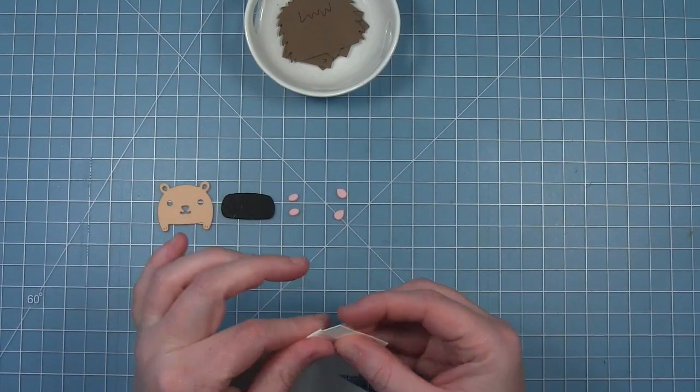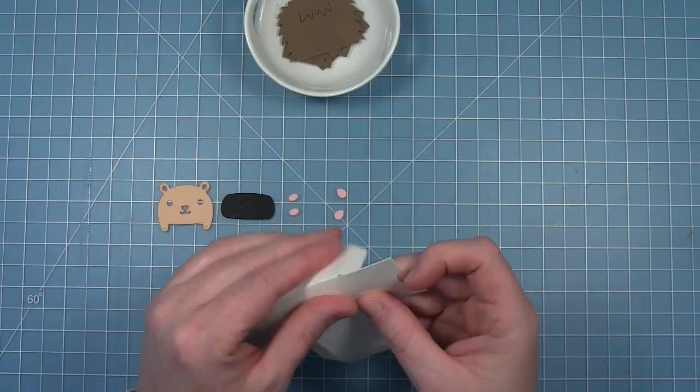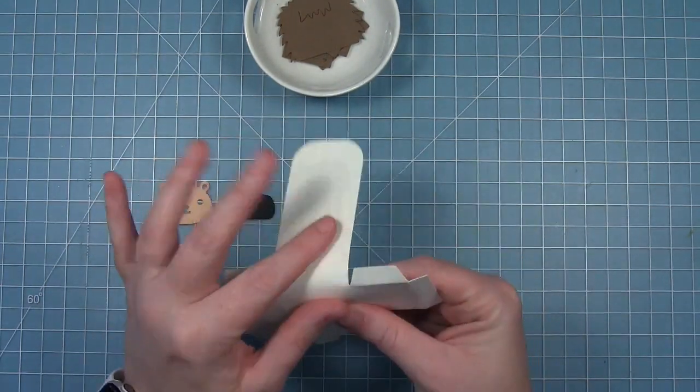I have a tiny gift box cut here from some cream cardstock and I'm just going to fold along all those score lines that the die creates.